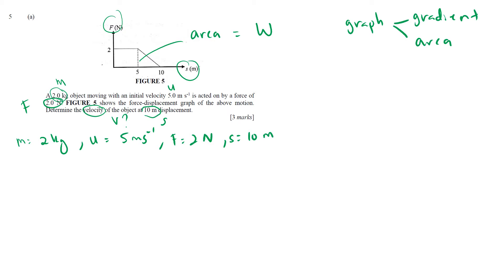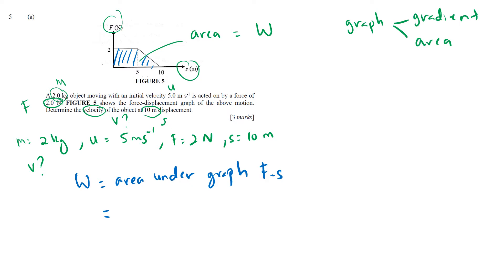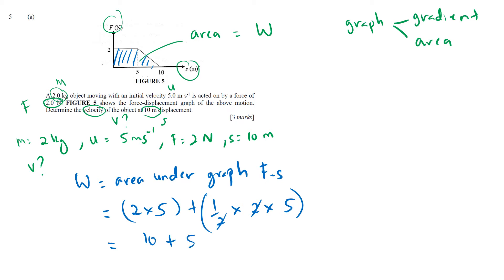Because they give you a graph, we use the area under the graph. Work equals area under the F against s graph. We divide the area into two sections: section A (a rectangle) is 2 × 5 = 10, and section B (a triangle) is half × 2 × 5 = 5. So total work = 10 + 5 = 15 joules. But this is not the final answer — the question asks for velocity, not work.